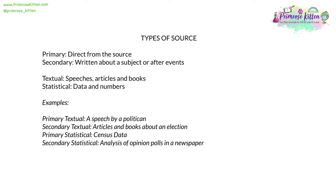There are several types of source we encounter when doing research. Primary sources come direct from the source. Secondary sources are written about a subject or after events. Textual sources are things like speeches, articles and books. Statistical sources are data and numbers. For example, a primary textual source might be a speech by a politician. A secondary textual source might be articles and books written after an election about that election. Primary statistical data would be direct from the source, such as government census data. Secondary statistical would be analysis of opinion polls in the newspaper.